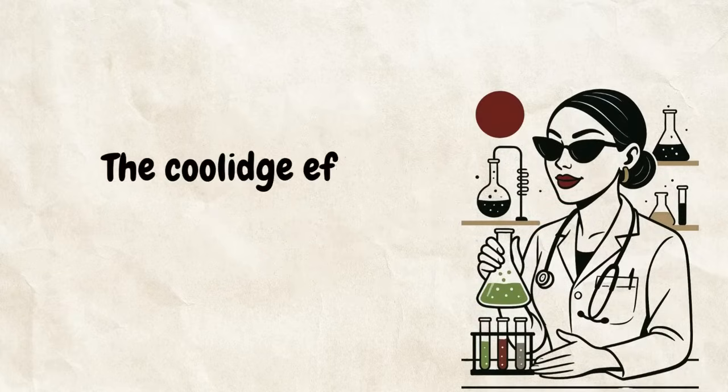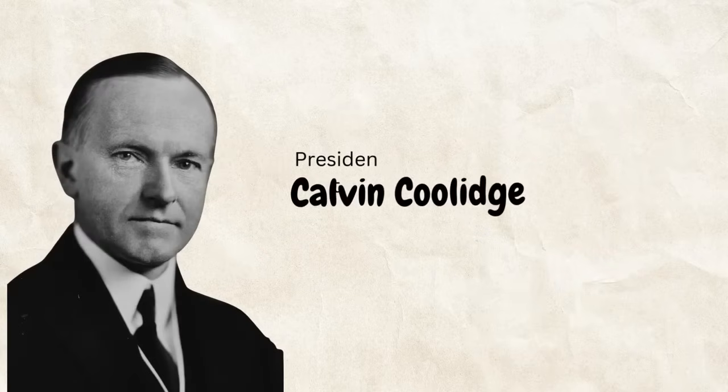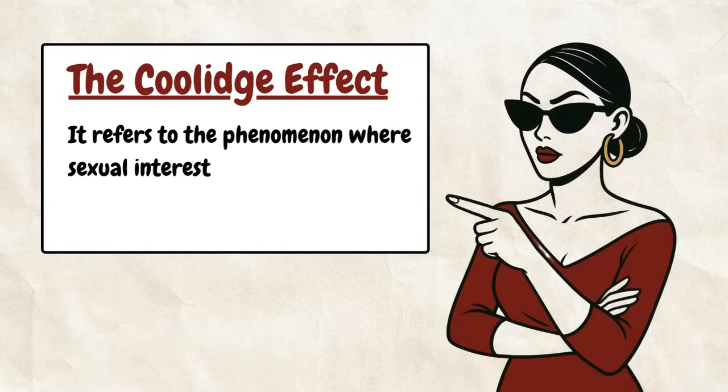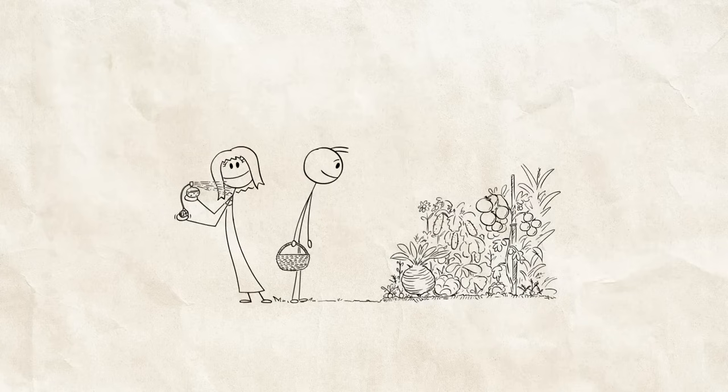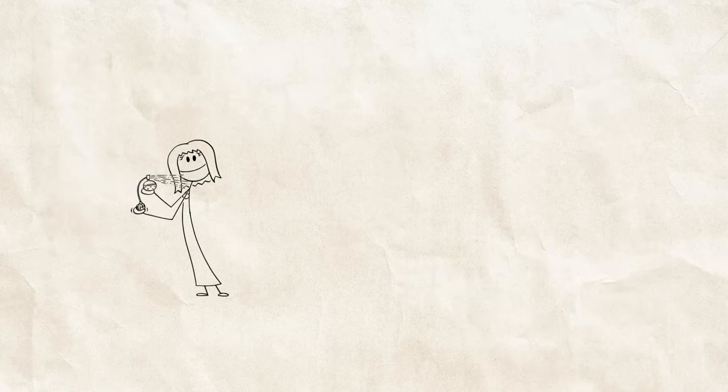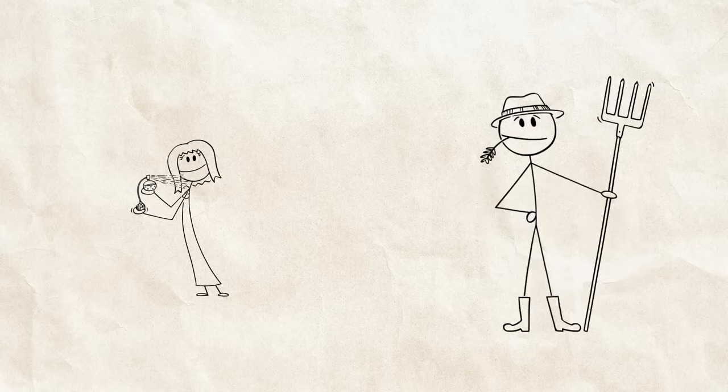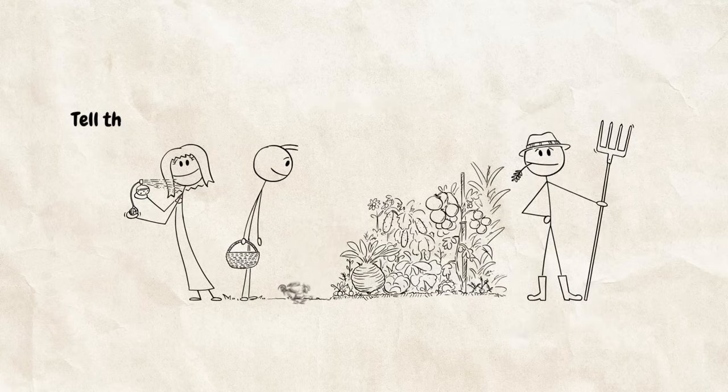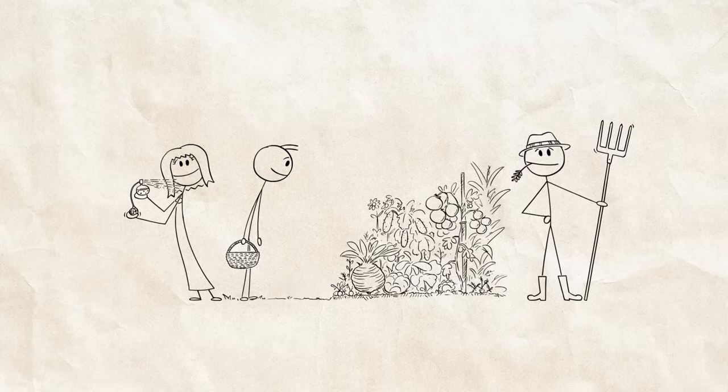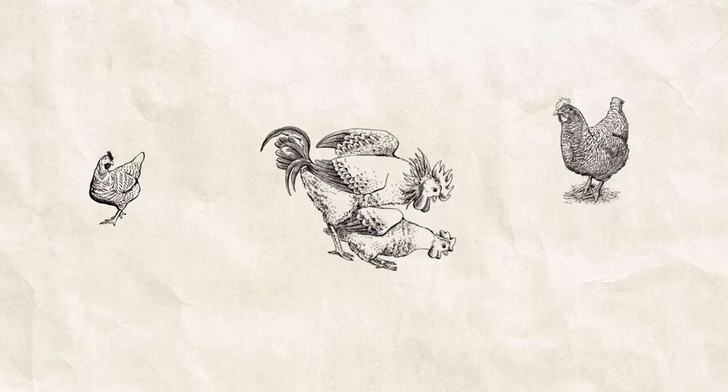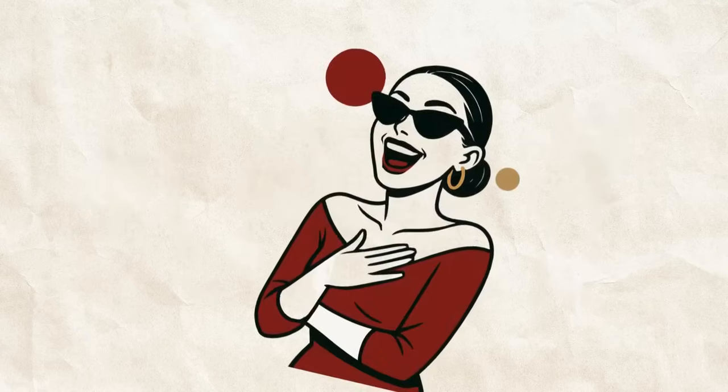Scientists call this the Coolidge effect. Named after President Calvin Coolidge, it refers to the phenomenon where sexual interest is renewed by the introduction of new partners. The joke is that Coolidge and his wife were visiting a farm, and Mrs. Coolidge noticed a rooster mating frequently. She asked how often it happened, and the farmer said dozens of times a day. She said, tell that to the president. When the president heard this, he asked, same hen every time? The farmer said, no, different hens. The president said, tell that to Mrs. Coolidge. I guess you could say that rooster was playing a real game of chicken with his relationships. Sorry, I had to throw that in there.